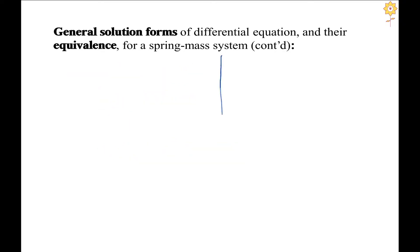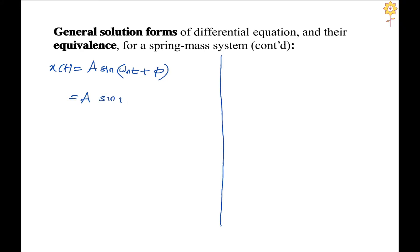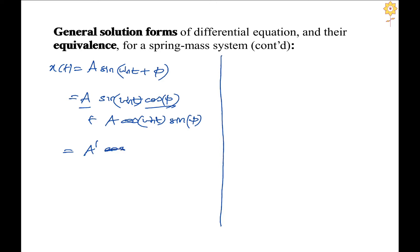Taking the first form, x(t) = A*sin(omega_n*t + phi), and expanding using the sine addition formula gives A*cos(phi)*sin(omega_n*t) + A*sin(phi)*cos(omega_n*t). Combining A*cos(phi) into a new constant A' and A*sin(phi) into a constant B', we get A'*sin(omega_n*t) + B'*cos(omega_n*t), which is exactly the third form where A is replaced by A' and B by B'. So equations 1 and 3 are equivalent.